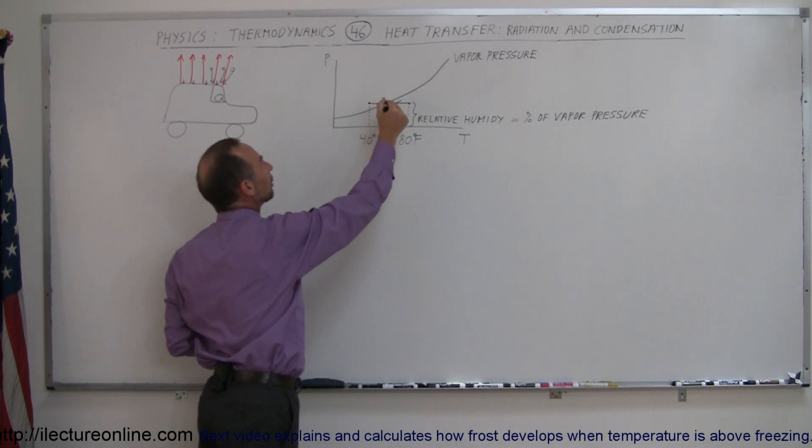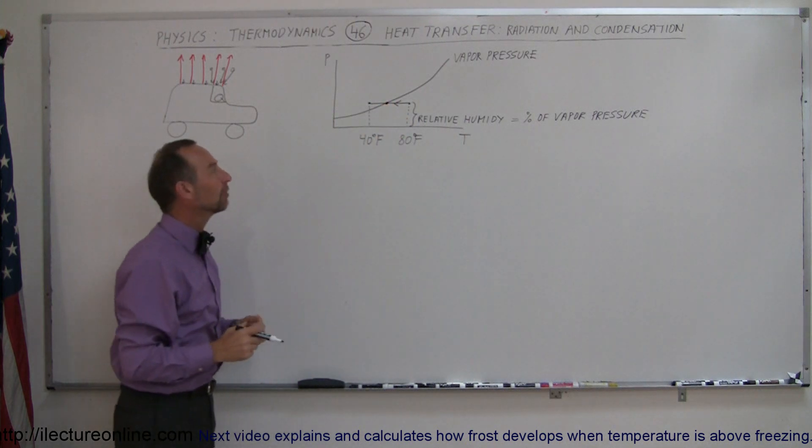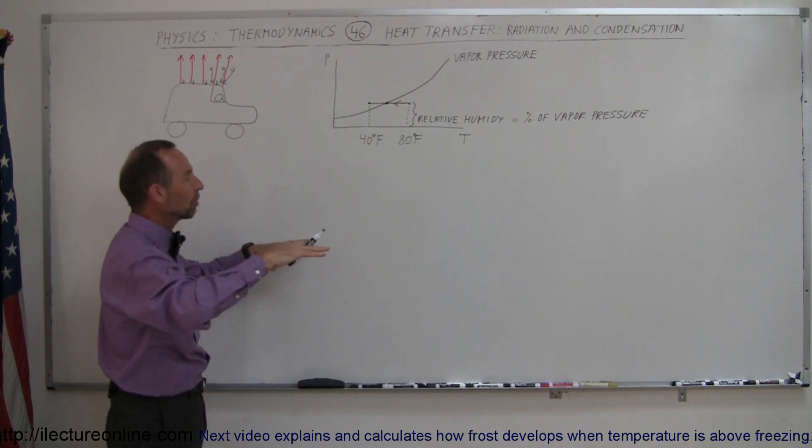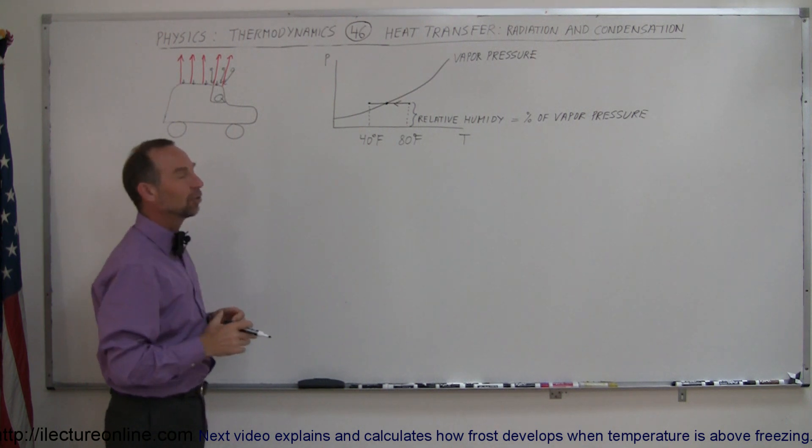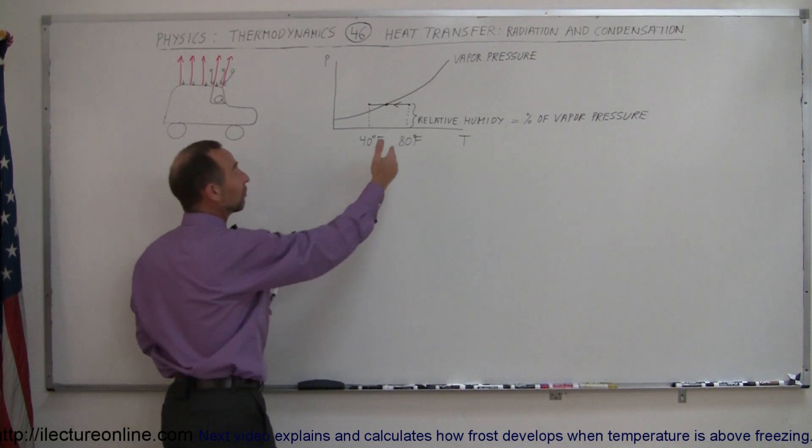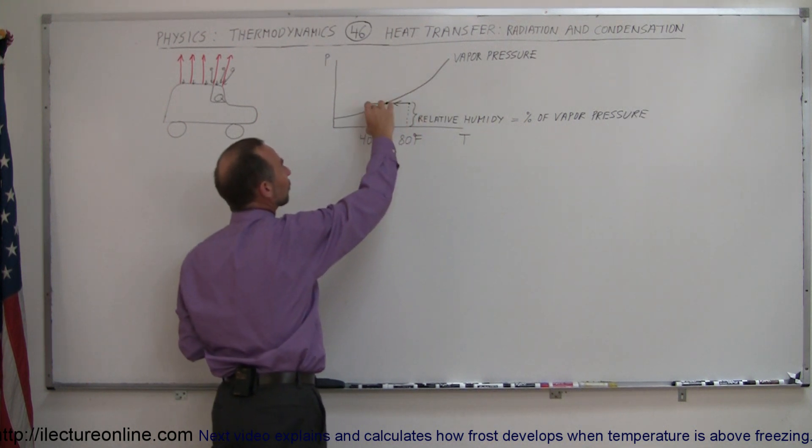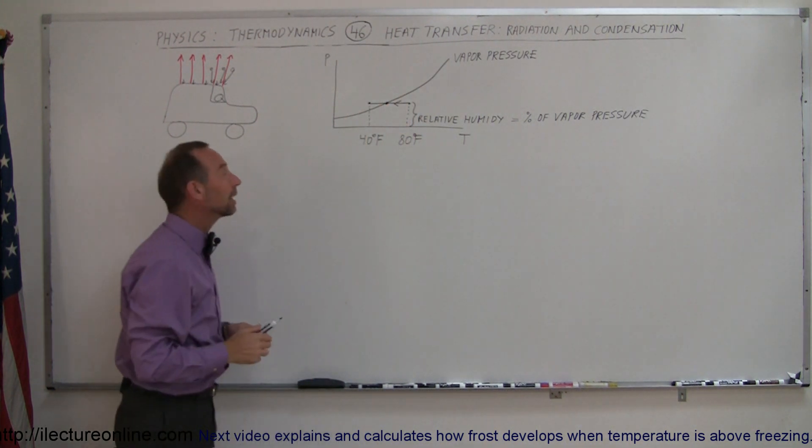So whenever we get to what we call the condensation point of the atmosphere, water will begin to come out of the atmosphere and begin to distribute itself on top of surfaces. And so that has to do with the relative humidity. If it's fairly high and the temperature of the air goes down, the moisture will begin to come out of the air.